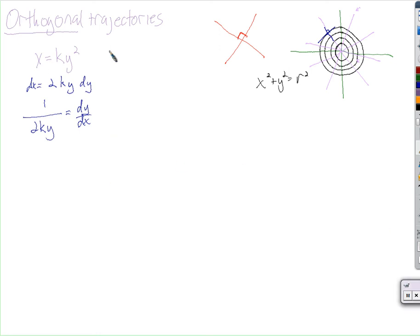And from this equation, we can find that k equals x over y squared. So we can replace k with x over y squared. 1 over 2 times x over y squared times y. This becomes 1 over, these cancel out, 2x over y. So this could be y over 2x.